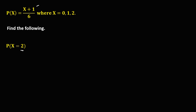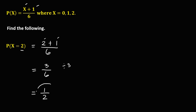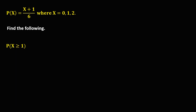So this becomes (2 + 1) over 6, then simplify. 2 plus 1 is 3, so we get 3 over 6. We need to reduce: 3 over 6 is divisible by 3, so this is 1 over 2. Therefore, p(x = 2) is equal to 1 half.